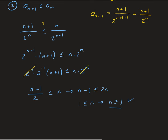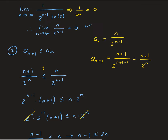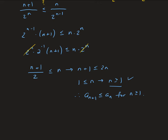So we showed both conditions are satisfied — the first part is satisfied and the second part is satisfied. Therefore, this series converges by the alternating series test.